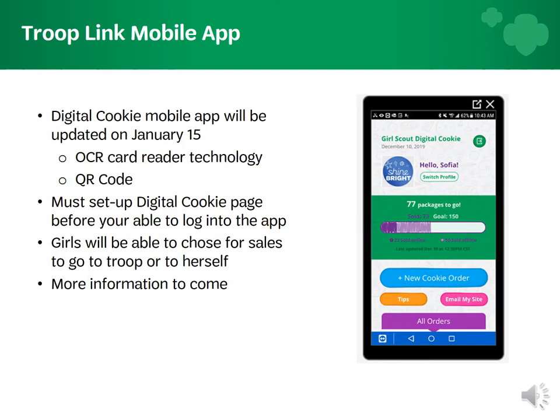The Digital Cookie mobile app will be updated on January 15th to include the OCR reader and QR codes. Girls will have the choice to have sales go towards their troop or their personal sales while using the cookies in hand feature of the mobile app. Watch for information coming soon on how to use the mobile app.